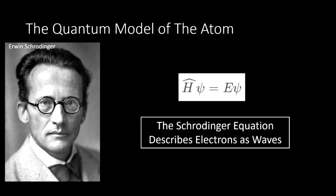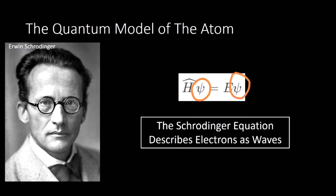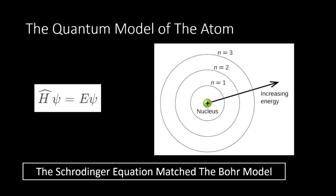Schrödinger comes along and describes electrons as waves around an atom. This equation is called the Schrödinger equation — we're never going to use it, so if it looks confusing, that's okay. This symbol here is called a wave function, and it describes the electron as a wave. He went through really complicated math — frankly, you don't learn it until the college level — to understand what electrons should do when placed around a nucleus. Remarkably, he did this with pen and paper, and when he finished, his results matched perfectly with the Bohr model. This equation predicted that the interaction of atoms with light would be exactly what the Bohr model predicts. So it matches the Bohr model in terms of light interaction, but goes beyond it in terms of what electrons are actually like.